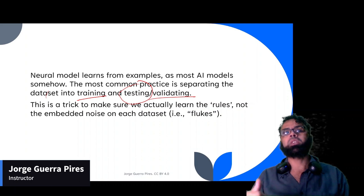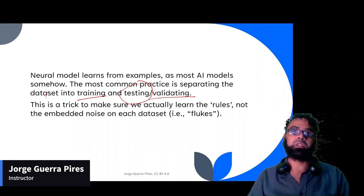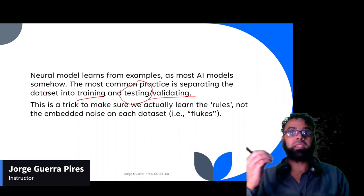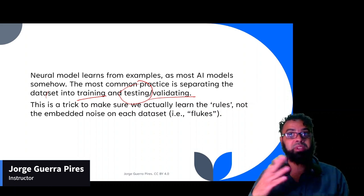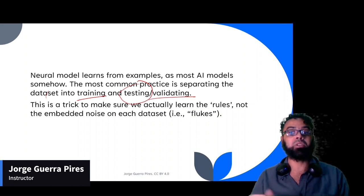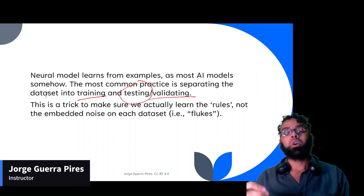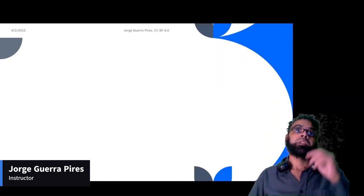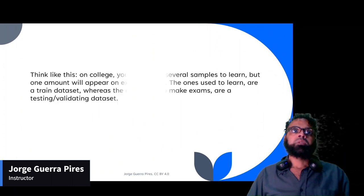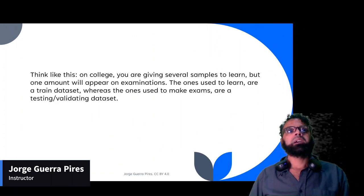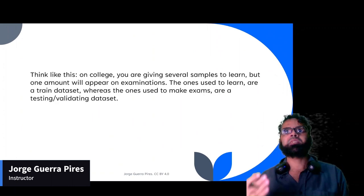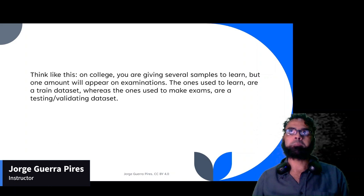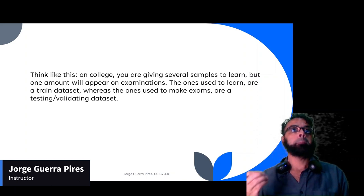Overfitting is when you train your model too much on the dataset and it did not learn the rule — it learned the data itself, which is a very bad thing. Whenever you try to use your model on new data, it's going to have a problem.